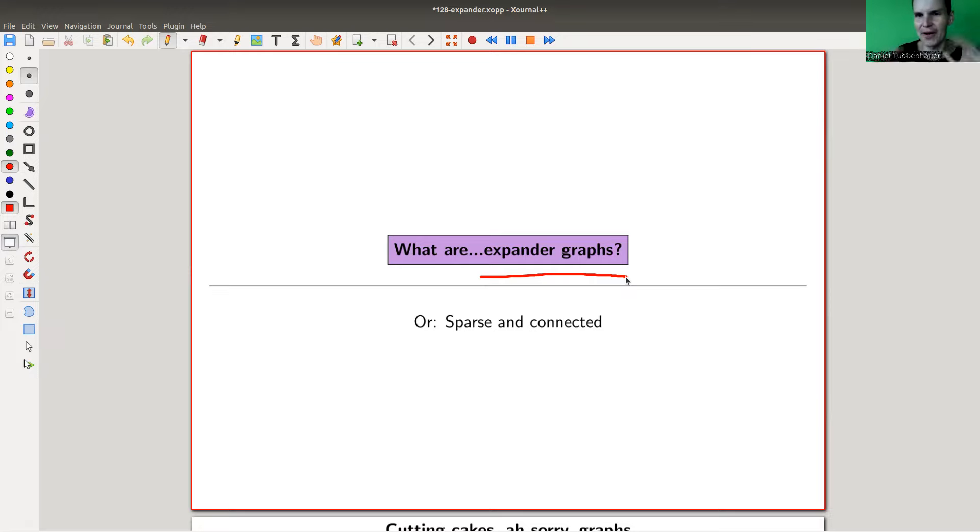Turns out that the construction of these graphs is not trivial at all. They're trying to find the balance between two contradicting properties in some sense. So you have one property that you want to maximize, and you want to minimize it at the same time. So trying to find a balance between two contradicting properties, and whenever you have that, it's not clear whether such an object actually should exist.